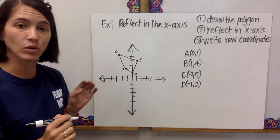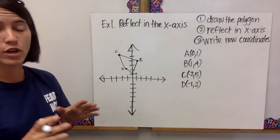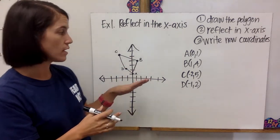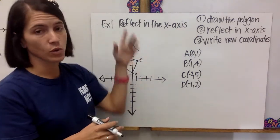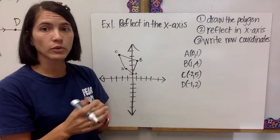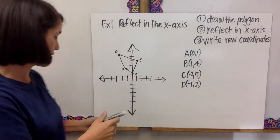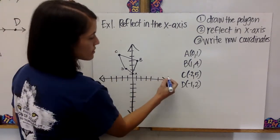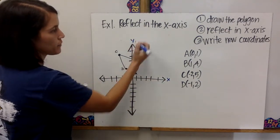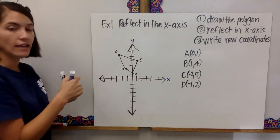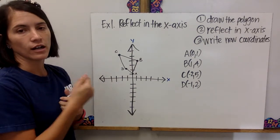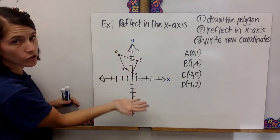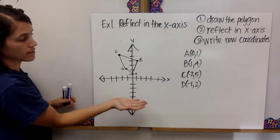It's important to label your vertices so you know your original vertices and your transformed vertices. Step two: I want to reflect it in the x-axis. The x-axis becomes your line of reflection, so we're going to flip it across the x-axis.